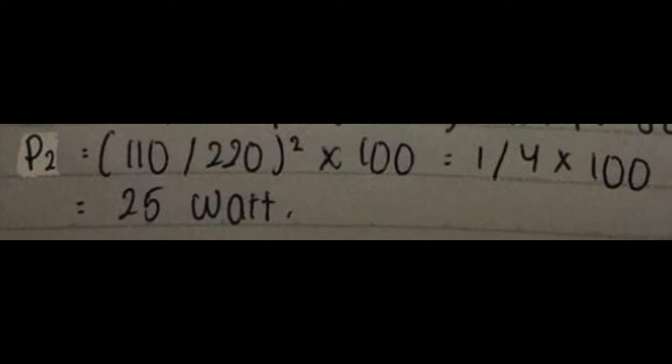Jawaban: P2 sama dengan 110 per 220 kuadrat dikali 100, sama dengan 1 per 4 dikali 100, sama dengan 25 watt.